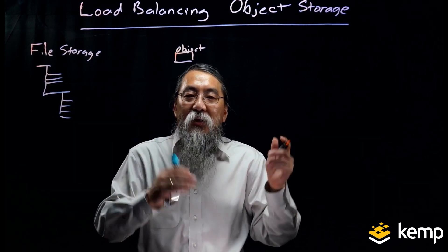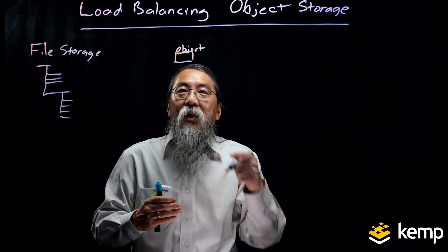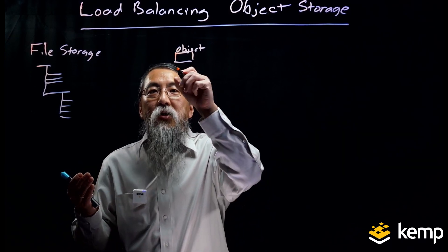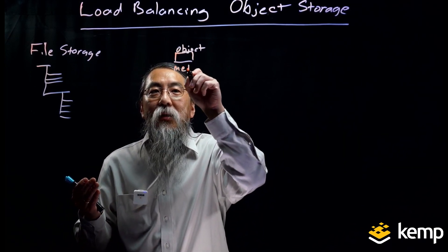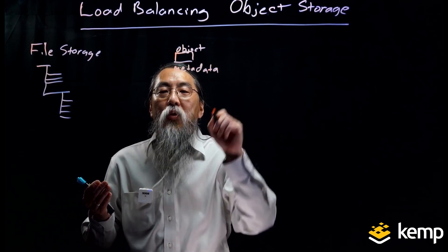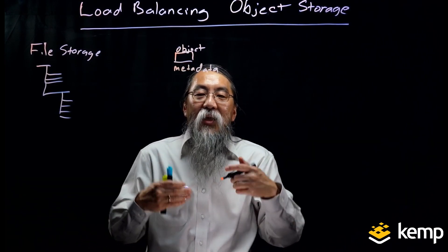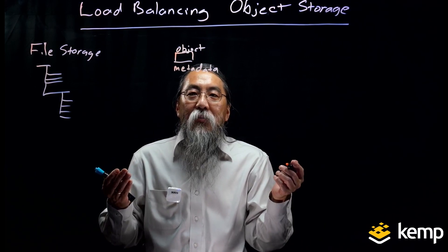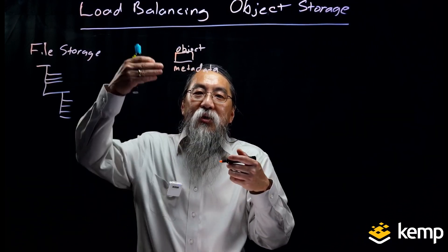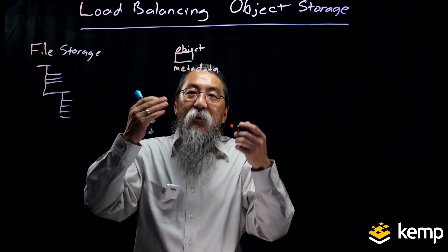There is no hierarchy in terms of how the file is stored. The object storage system knows where the file is and what it is because of the file name, the date stamp, and also what we call metadata. This metadata is important because it's like the hashtag in social media — they are values that you associate with this object that tell you about it.